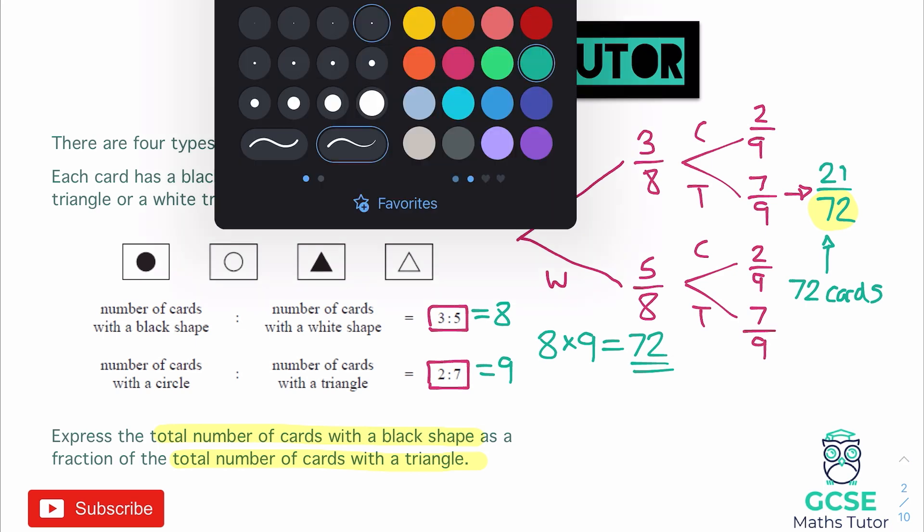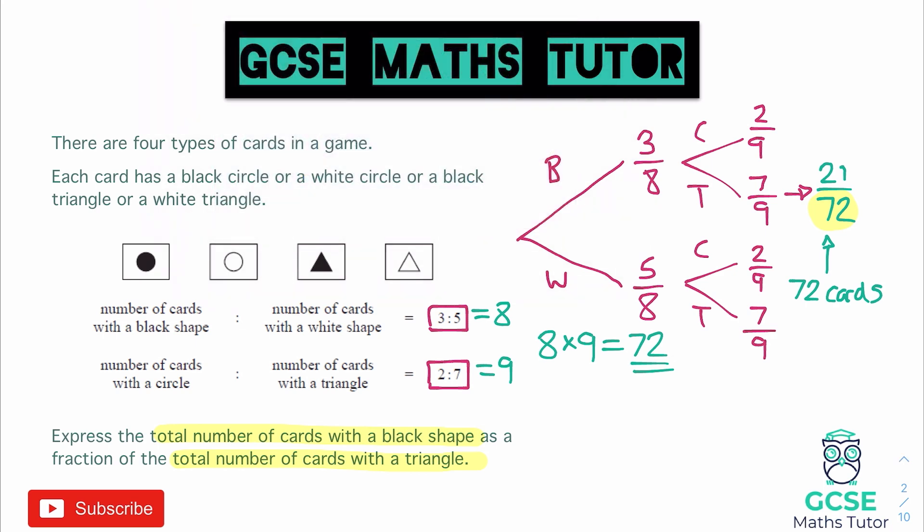Now, this question is obviously a little bit different. This is quite a unique one. So anyway, we've got the 72. Now we need to figure out, well, out of those 72, if there were just 72,